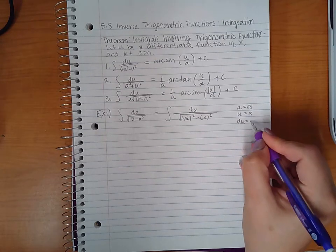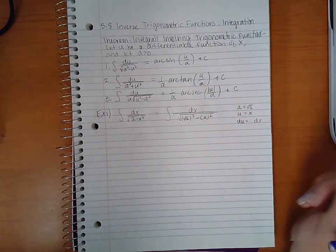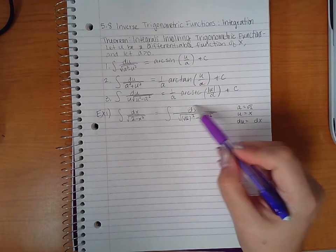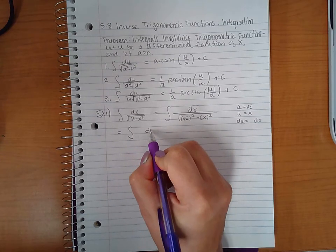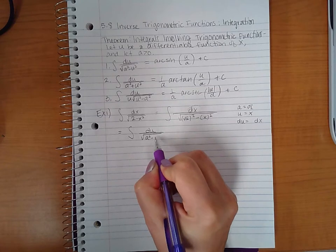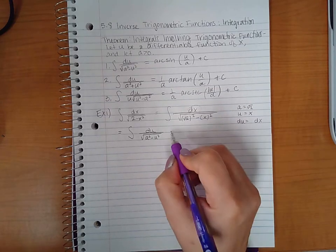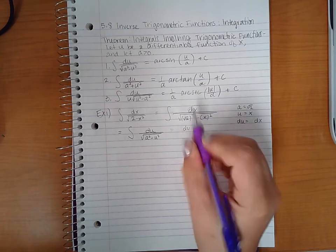So the derivative of u is du and the derivative of x is one dx or just dx, which we do have here. So if we do change the variables over, we end up with du over square root of a squared minus u squared, which according to this formula up top we arc sine.